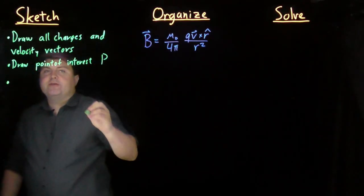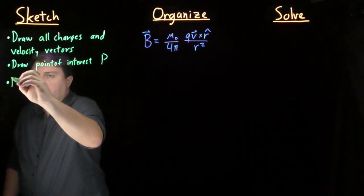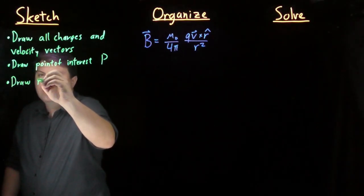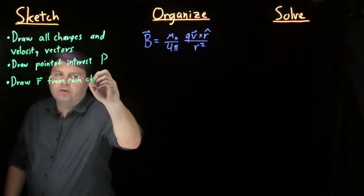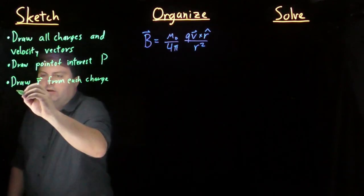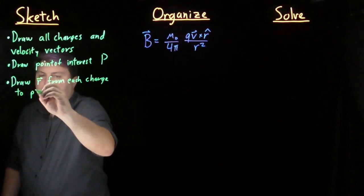Once we have our point of interest and all of our charges, we want to draw our vector from each charge to the point of interest P.